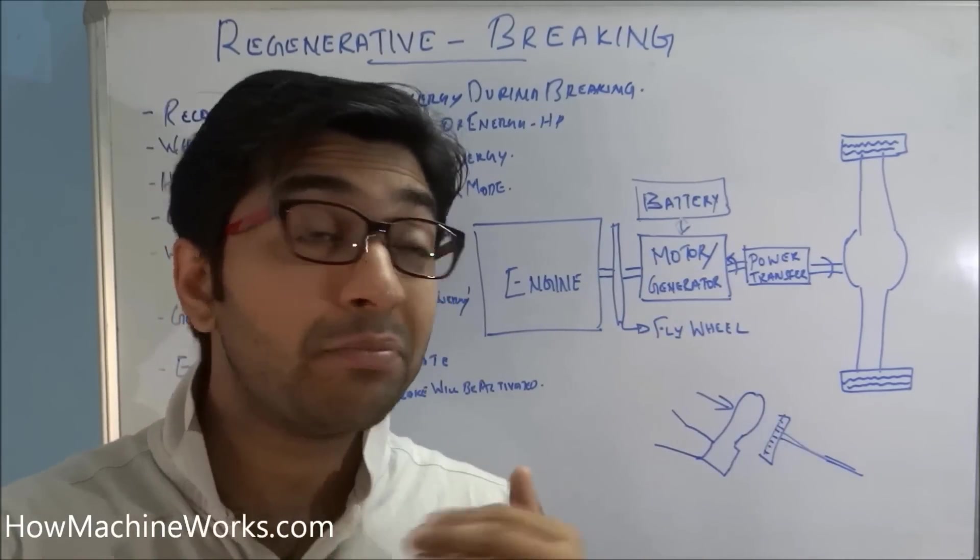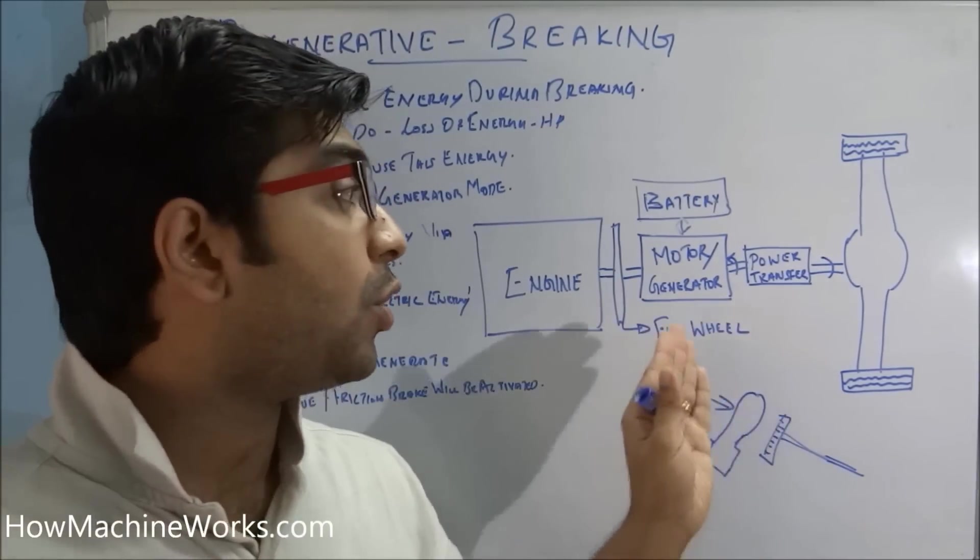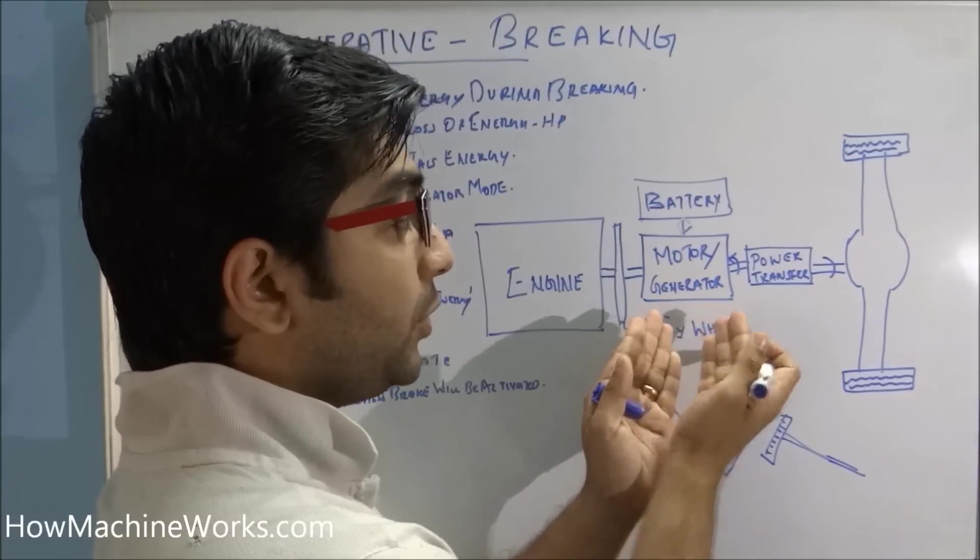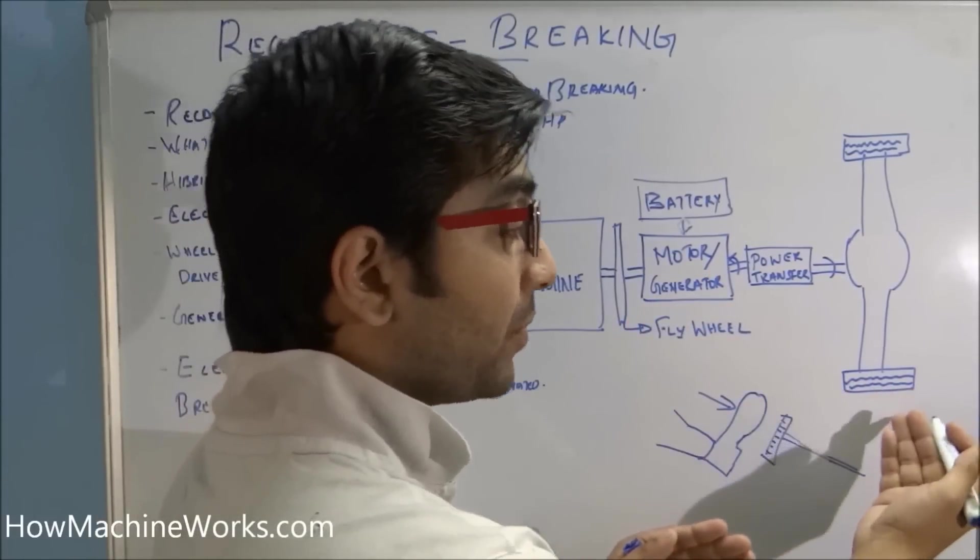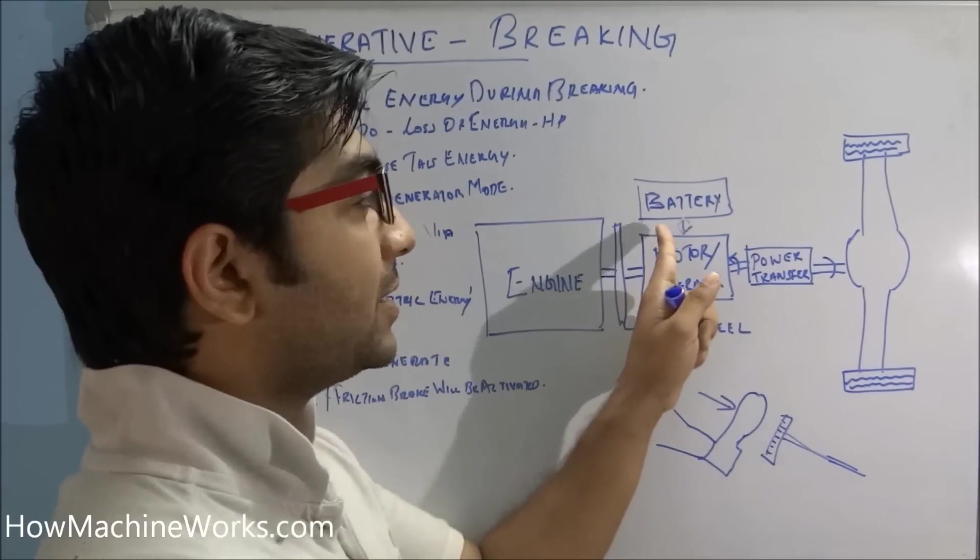So the torque created by the reversal of the motor to a generator slows down the vehicle, creating the braking effort. This generator will use the kinetic energy while the braking effort is happening and convert that into electric energy and store it inside the battery.